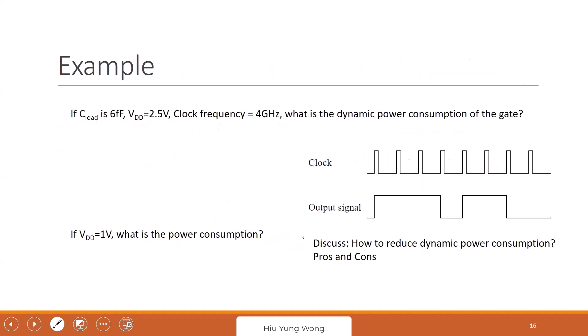That is a big deal — your iPhone needs to charge every day, but if you reduce the voltage by half you might only charge every four days. This is very important. For example, if the loading capacitance is 6 femtofarads and the voltage is 2.5V, and the clock is 4 GHz, we don't look at the clock directly — we look at the frequency when you go from zero to one. Some logic doesn't switch often, and unnecessary glitches waste energy.